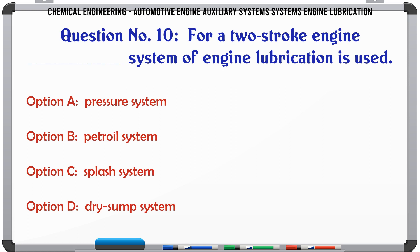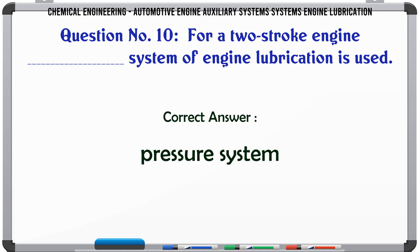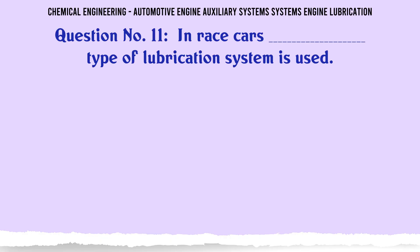For a two-stroke engine, which system of engine lubrication is used? a) pressure system, b) petrol system, c) splash system, d) dry sump system. The correct answer is pressure system.